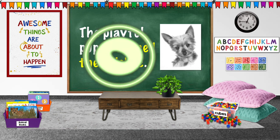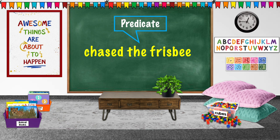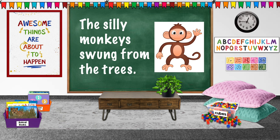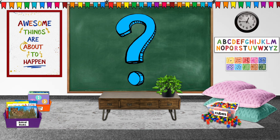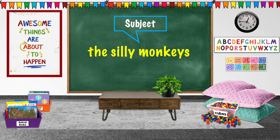It chased the frisbee. That's the predicate, the action part of our sentence. Let's try a few more. The silly monkeys swung from the trees. What is our sentence about? The silly monkeys. That's our subject. What did they do?